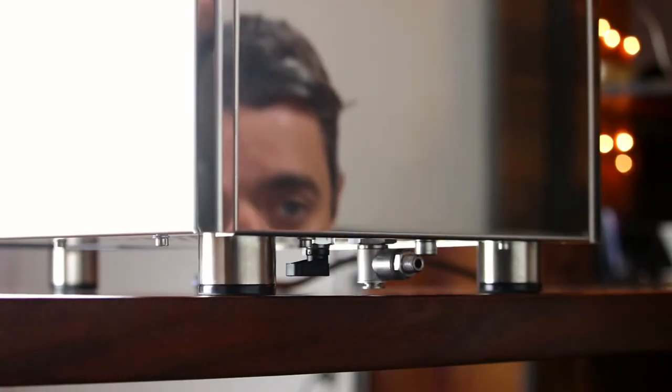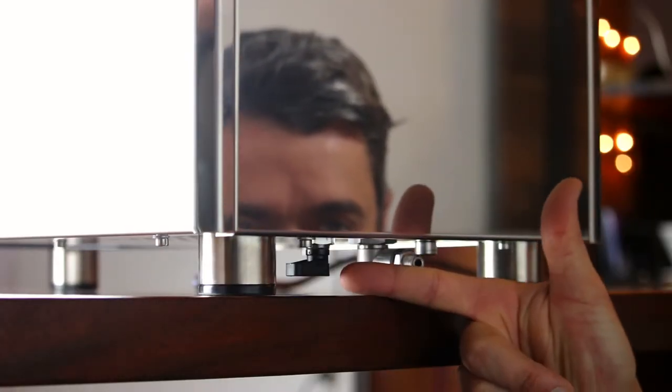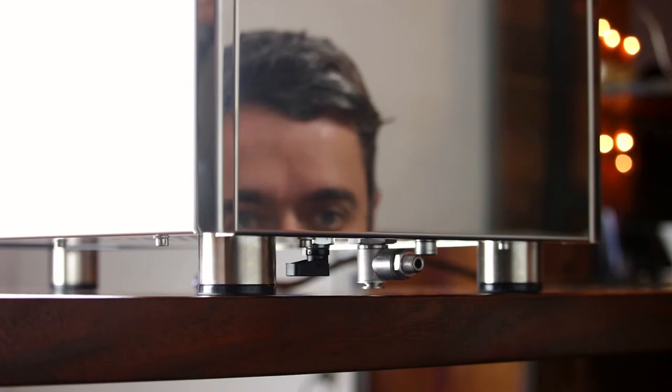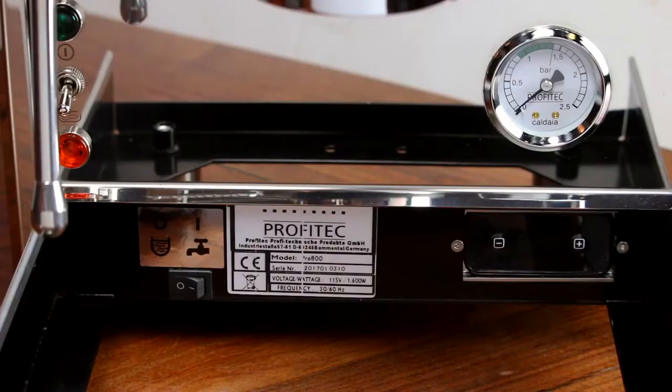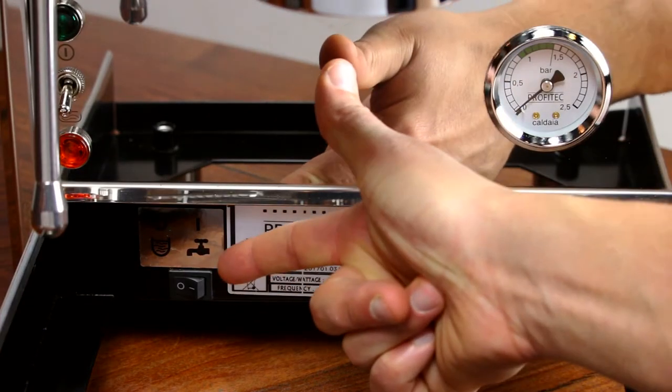The Pro 800 can use either the built-in reservoir or the plumbed-in line. If you plan on using the reservoir, make sure the water source knob underneath the machine is in this position, and the water source switch under the drip tray is set to reservoir.